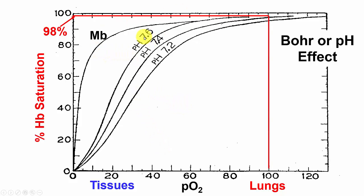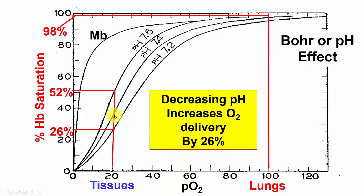Here's a graph showing myoglobin and hemoglobin saturation at pH 7.6, 7.4, and 7.2 versus PO2, illustrating the Bohr effect. Normally we go to 98% saturation in the lungs and deliver oxygen out at a PO2 of 20 in the tissues. At pH 7.6 throughout, only 52% of oxygen is delivered. However, if we bind at pH 7.6 and deliver at pH 7.2, only 26% remains on the hemoglobin — giving a 26% increase in oxygen delivered to the tissues, because the decrease in pH changes the hydrogen bonds and the structure of hemoglobin.